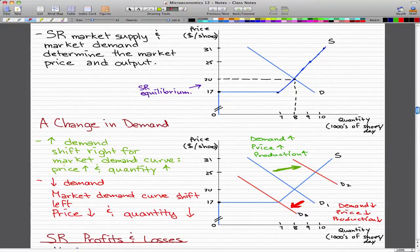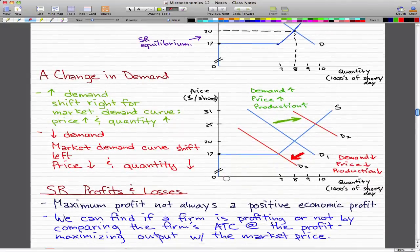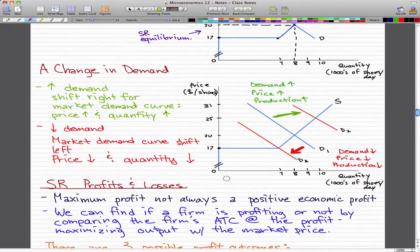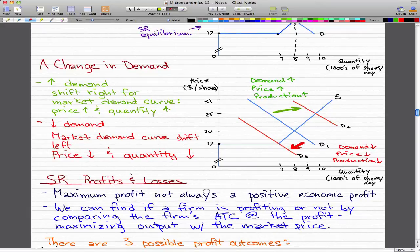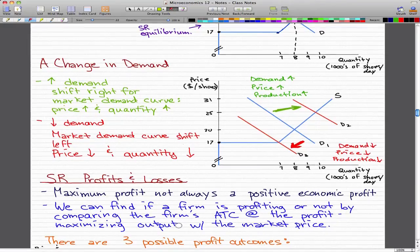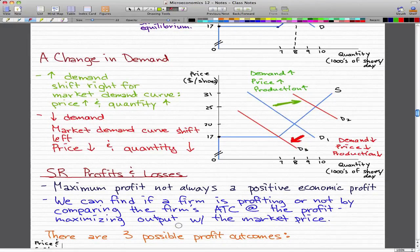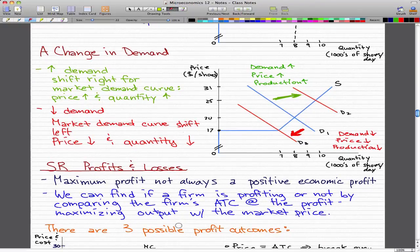And that's what I really wanted to go through in this video. I guess I should also go through short-run profits and losses. So let's just do this really quickly. Maximum profit is not always a positive economic profit. To determine whether a firm is making an economic profit or incurring an economic loss, we will compare the firm's average total cost at the profit maximizing output with the market price. And there are three possible profit outcomes, and we will go through this in the next video.